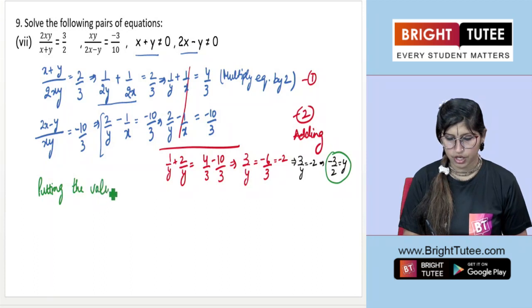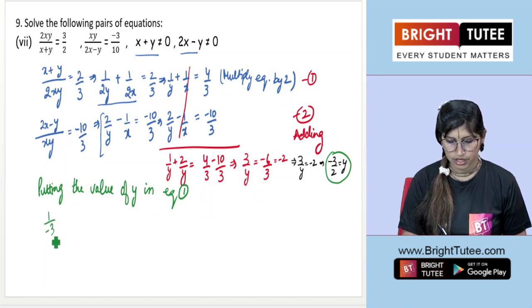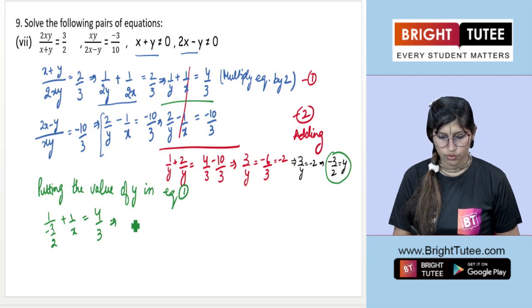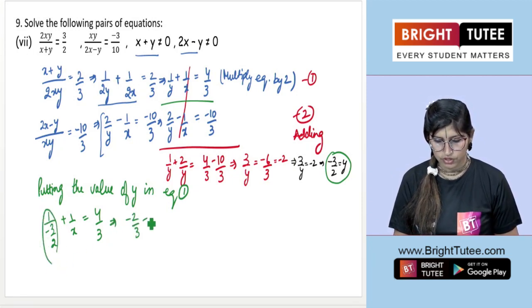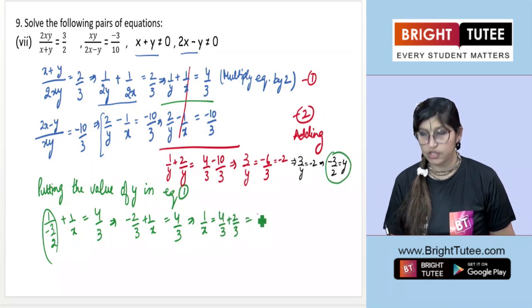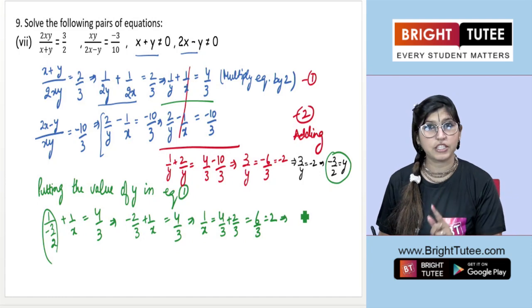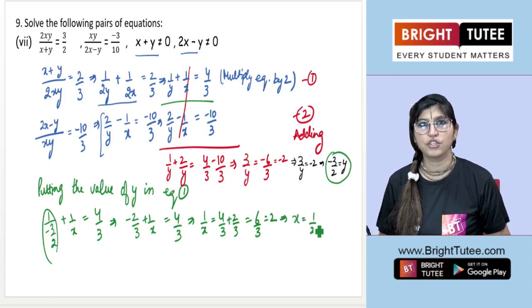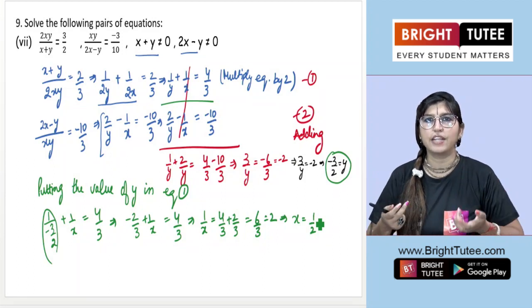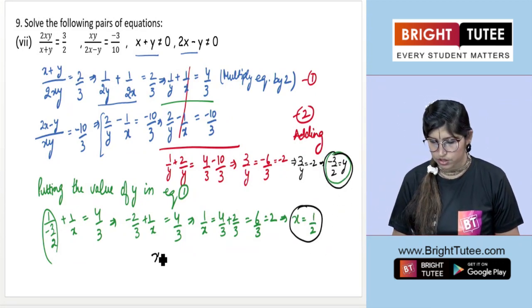Substituting y = −3/2 into equation 1: 1/(−3/2) + 1/x = 4/3, which gives −2/3 + 1/x = 4/3. So 1/x = 4/3 + 2/3 = 6/3 = 2. Taking the reciprocal, x = 1/2.